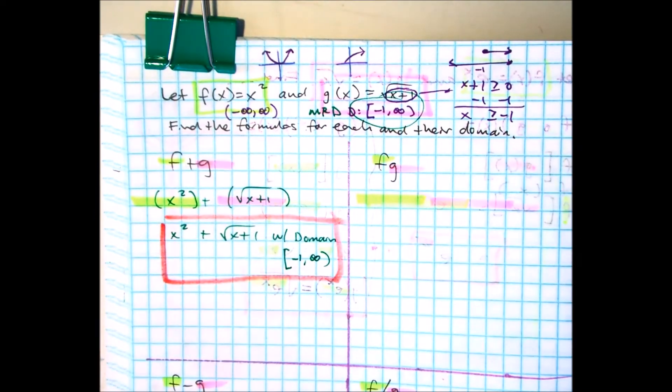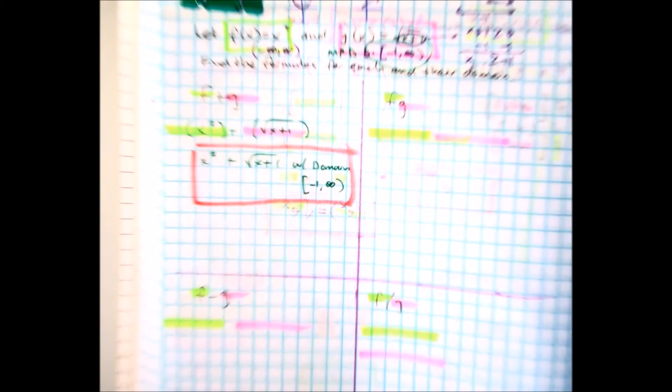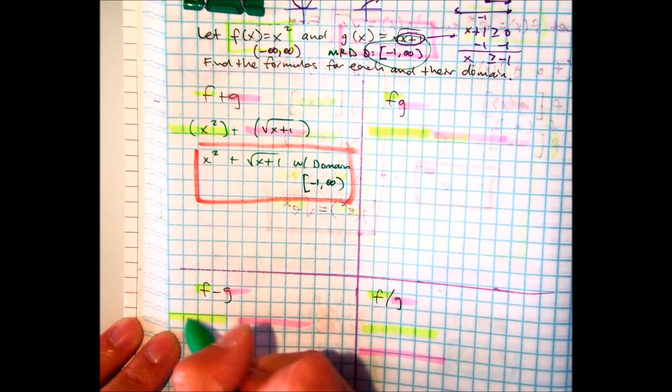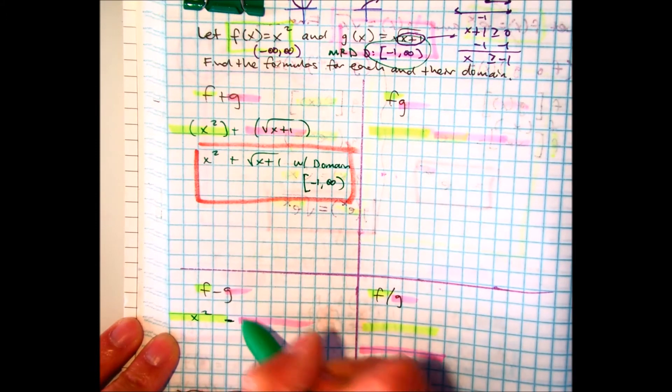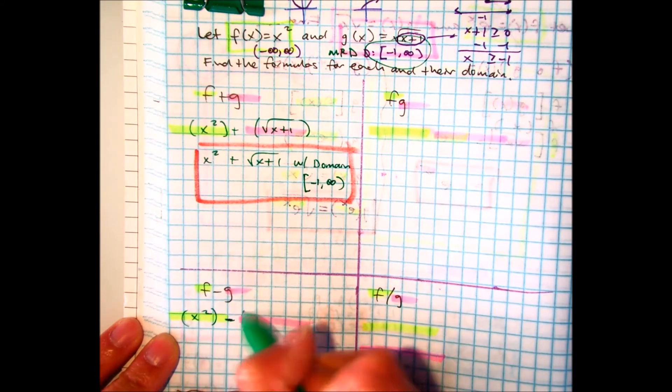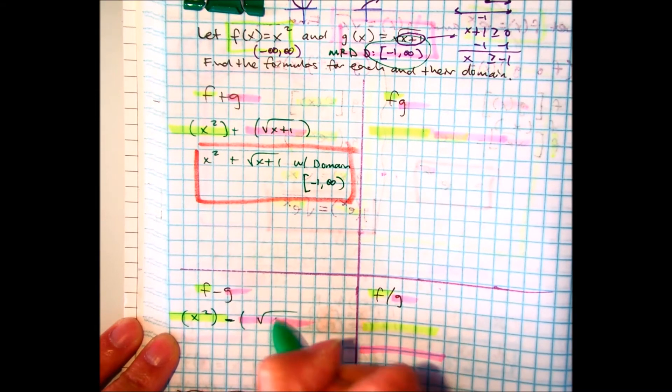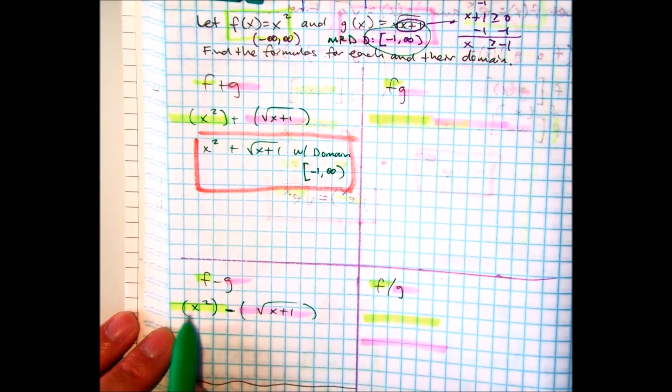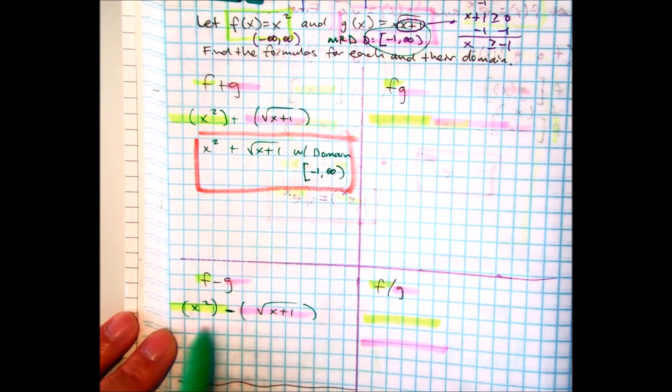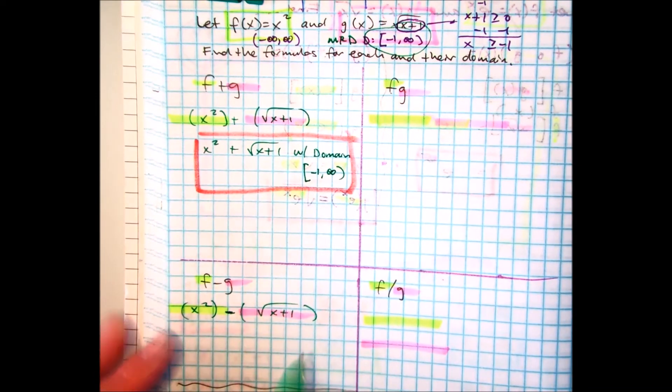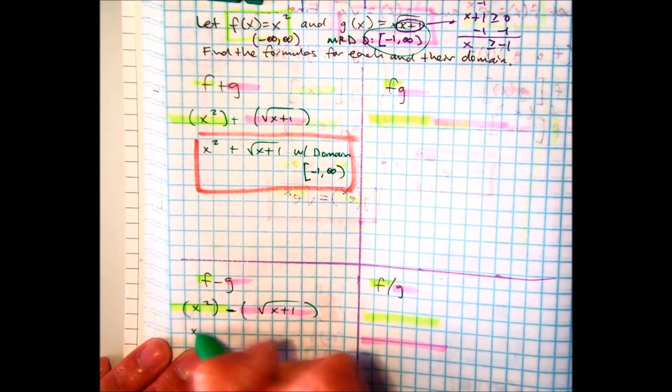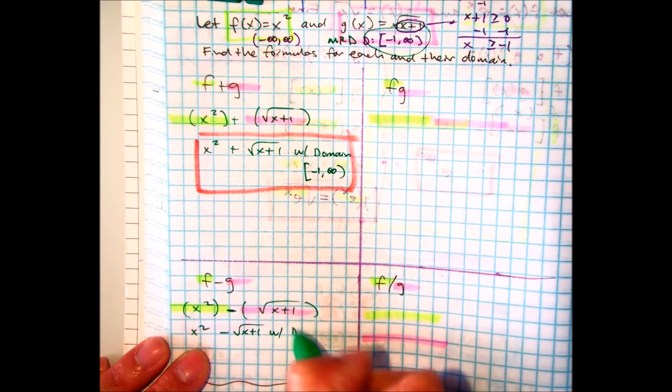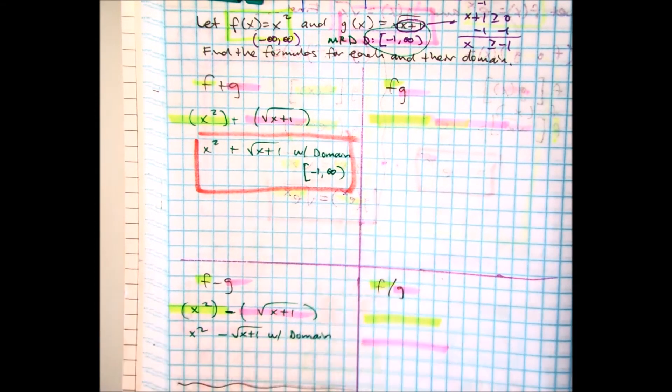So, we're just applying the math operations and applying the domain. Let's try this one down here. F minus G. F is x squared. And then we're subtracting. So, parentheses. And then G is square root of x plus 1. Now, you're not going to do anything crazy like trying to subtract this x from inside. They're just, they're not the same. So, they're not like terms. So, it's basically the same. x squared minus square root of x plus 1 is our answer.